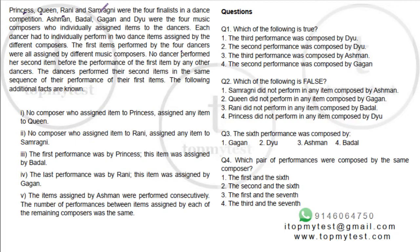Princess, Queen, Rani and Samaragini are four finalists in a dance competition. Asman, Badal, Gagan and Dew are four music composers who individually assigned items to the dancers. Each dancer has to individually perform in two dance items assigned by different composers. The first items performed by the four are all assigned by different music composers. No dancer performed a second item before the first item performance of any other dancer. The dancers perform their second items in the same sequence as their first items.